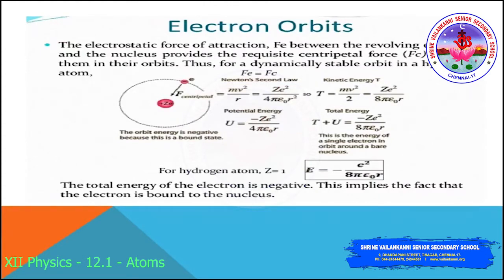The electrostatic force of attraction FE equals MV² / R, and the centripetal force FC equals 1/(4πε₀) × e² / R². From these two expressions, we get the orbital radius R equal to e² / (4πε₀ × MV²).